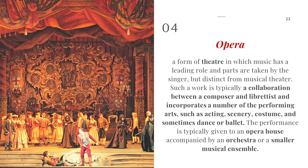Of course we have a large theatrical form called opera. An opera is a form of theater in which music has a leading role and parts are taken by singers, distinct from a musical theater. Such a work is typically a collaboration between a composer and a librettist, and incorporates a number of performing arts such as acting, scenery, costume, and sometimes dance or ballet. The performance is typically given in an opera house accompanied by an orchestra or smaller musical ensemble.